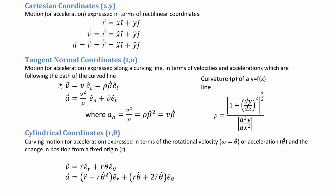One hundred percent of our velocity is in the tangent direction, expressed as the unit vector t-hat. Using the arc length function, we can also express this velocity as the radius times the angular velocity, also in the t-hat direction.